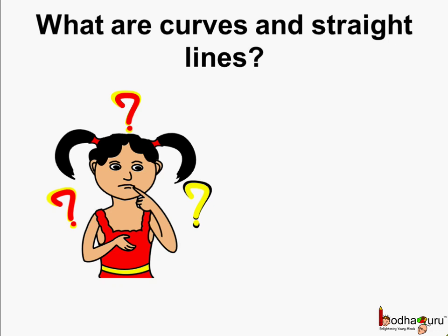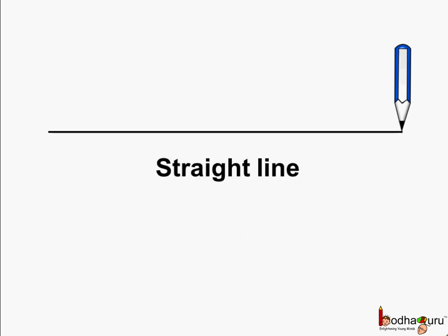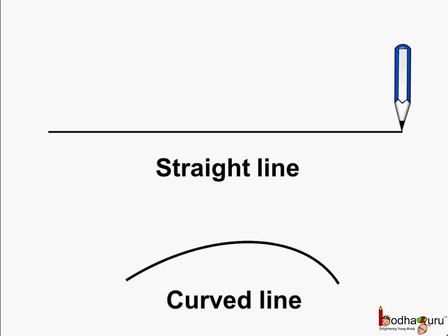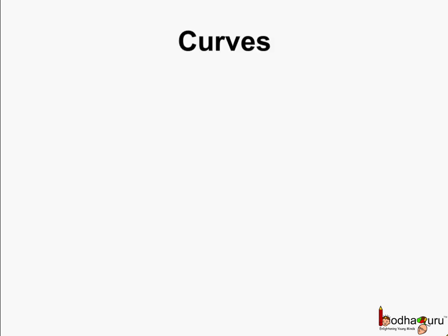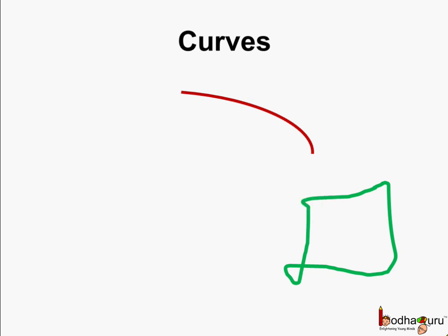First, what are curves and what are straight lines? We already know this is a straight line and this is a curve, or you can say curved line. When we draw lines on a piece of paper without lifting pen or a pencil and without using a scale or a ruler, we get the shapes which are called curves. So, these are the curves.